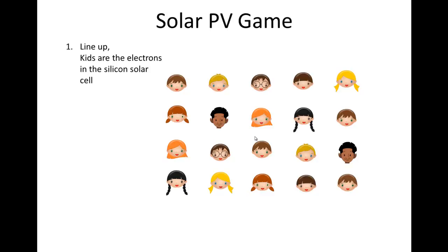I like to have them reach forward and touch the shoulder of the person in front of them to get the spacing on the rows. And the kids are the electrons in the silicon solar cell.